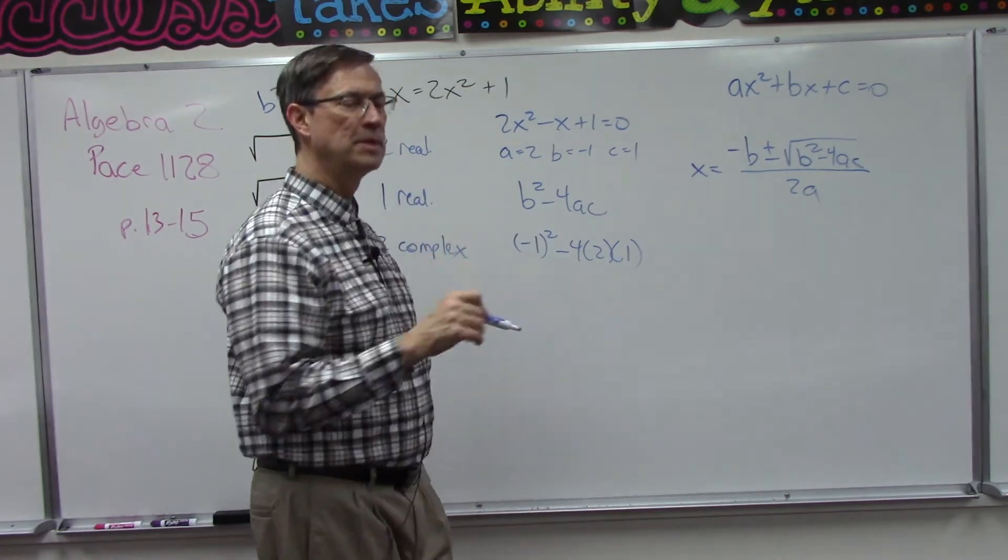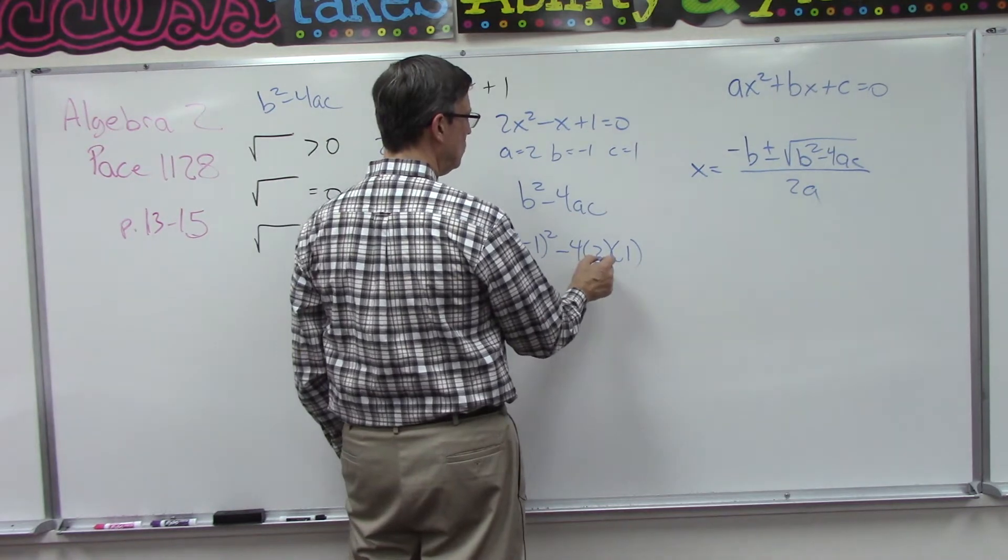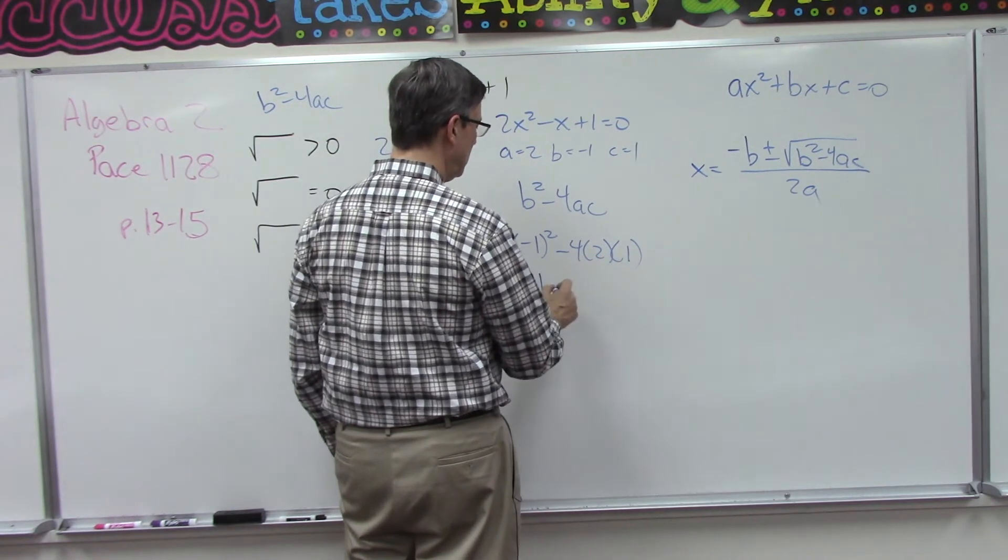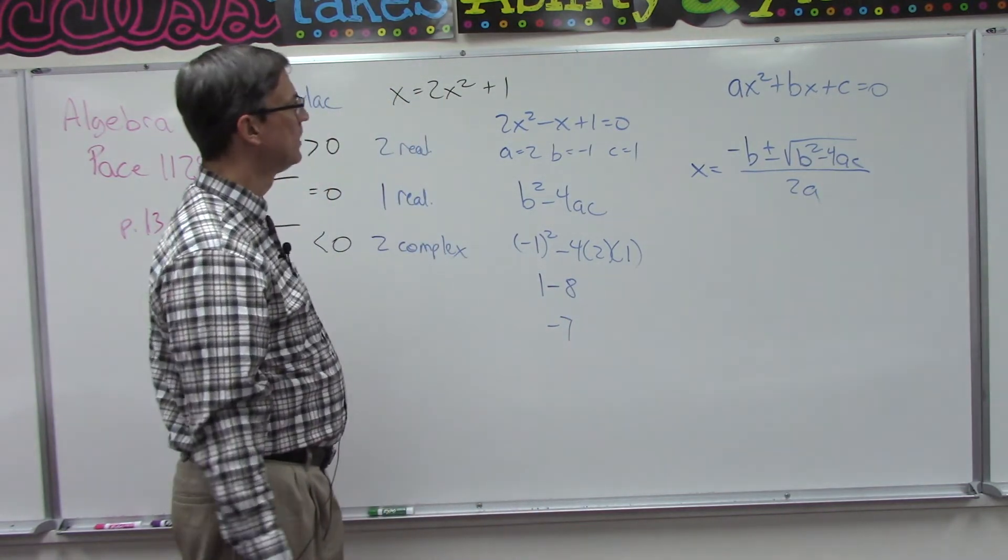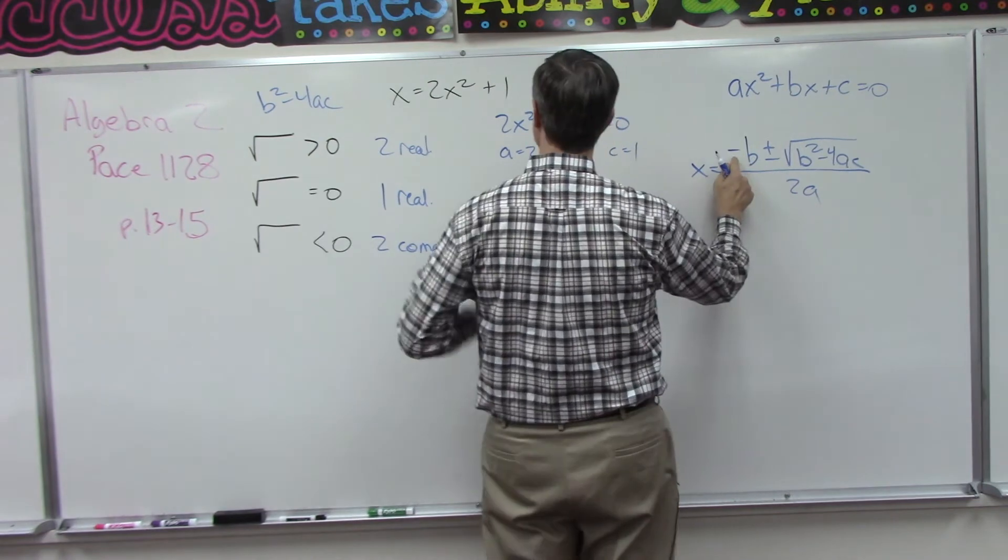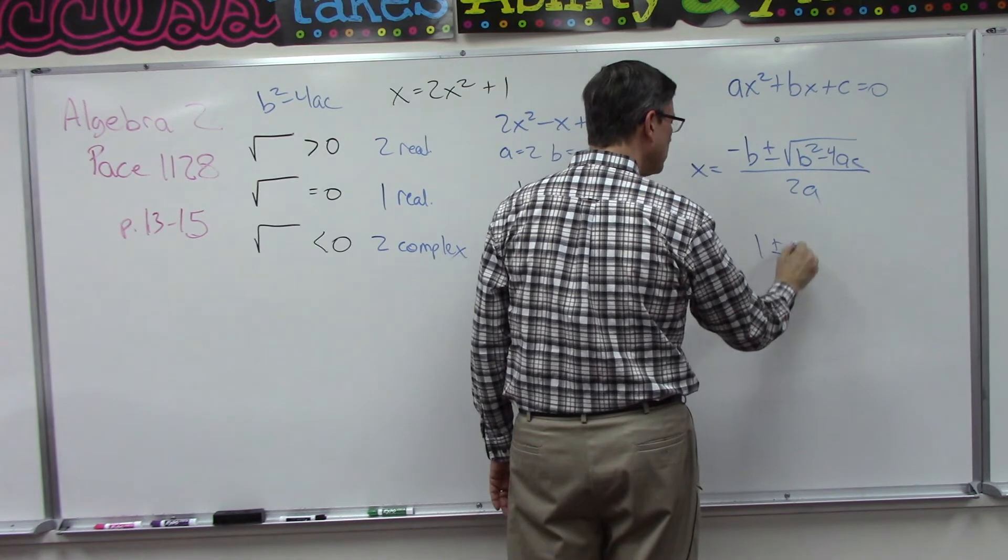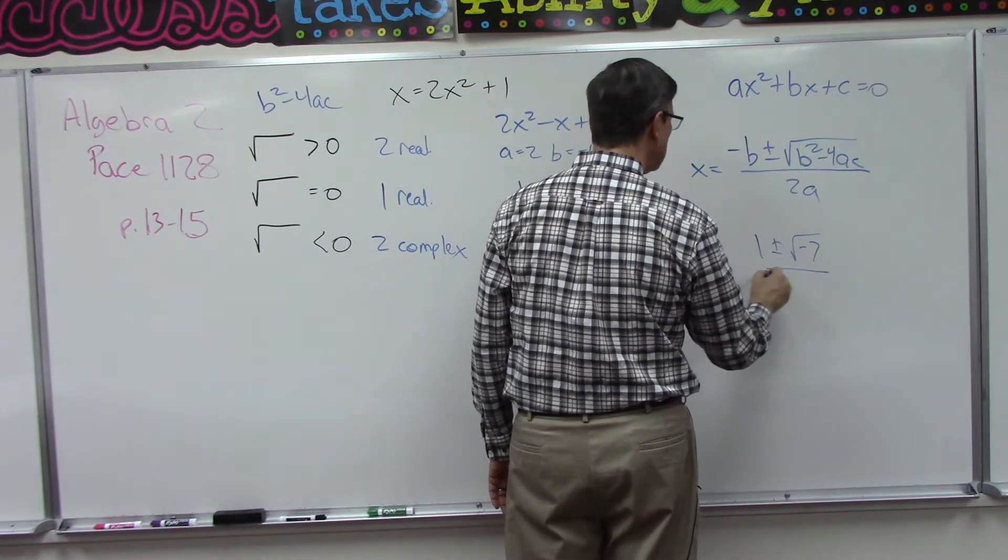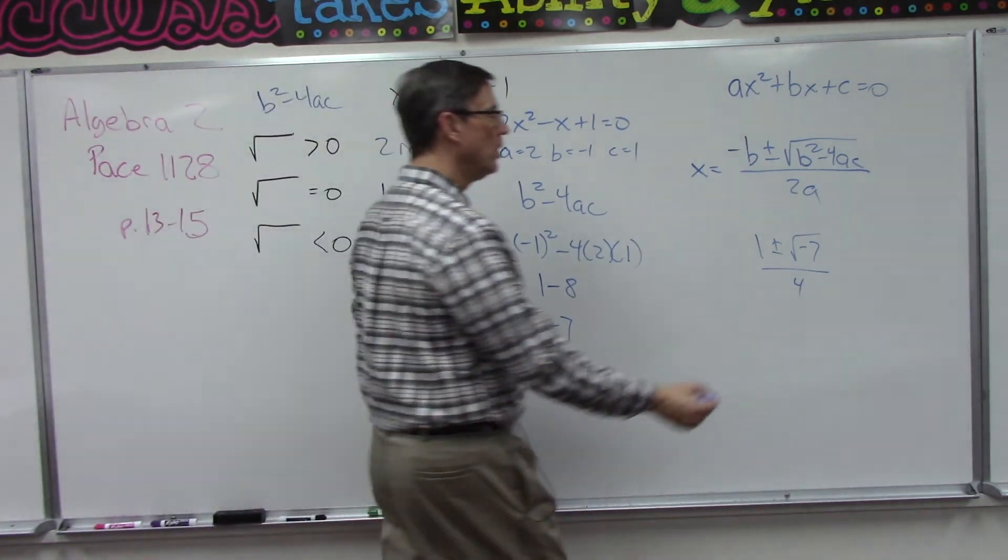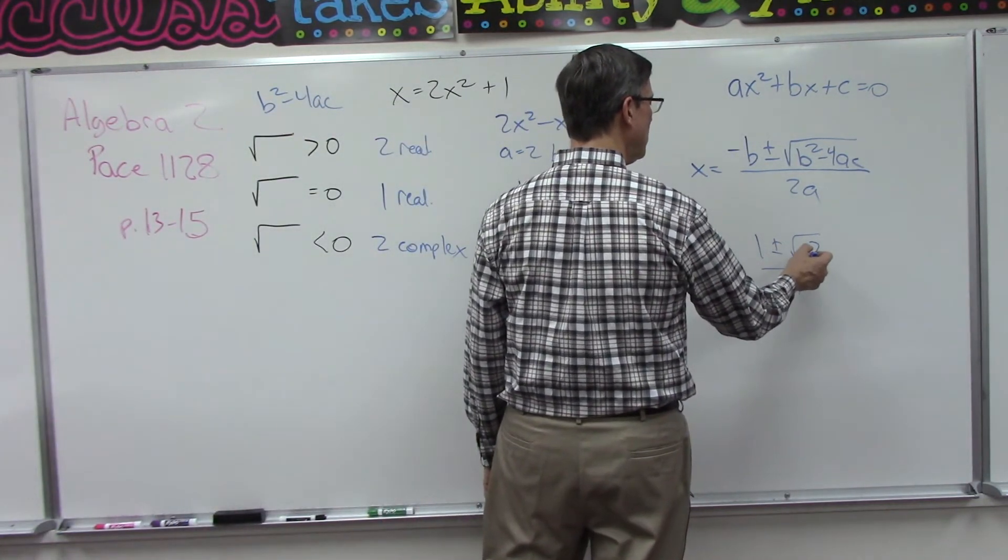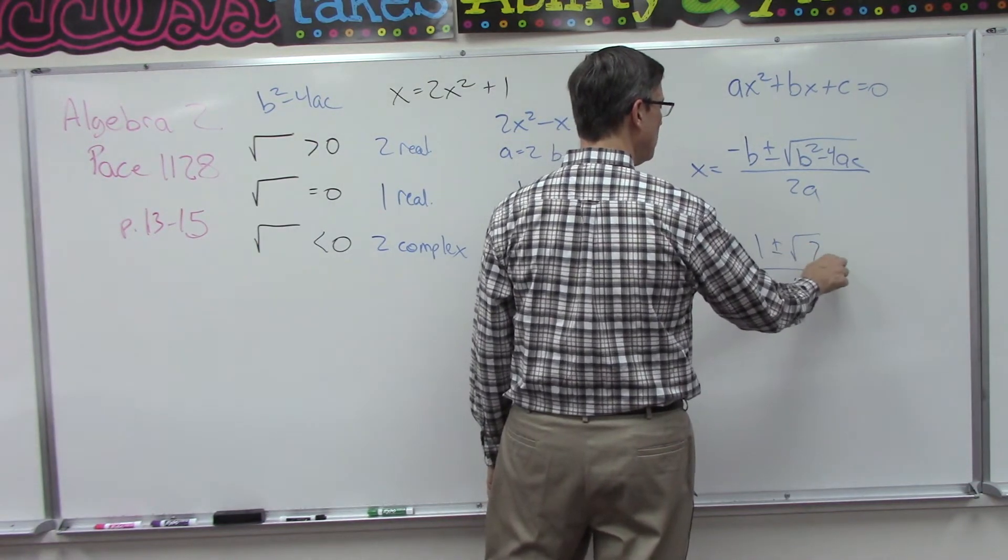What is negative one times negative one? Positive one, correct. Four times two is eight, eight times one is still eight. So we have one minus eight, so we get negative seven. If we had been solving this whole thing here, we would have negative b, or one, plus or minus the square root of negative seven over four if we solve the whole thing. But all we're looking at is this part here. The very fact that we have negative seven means that my answer is going to be square root of seven i.